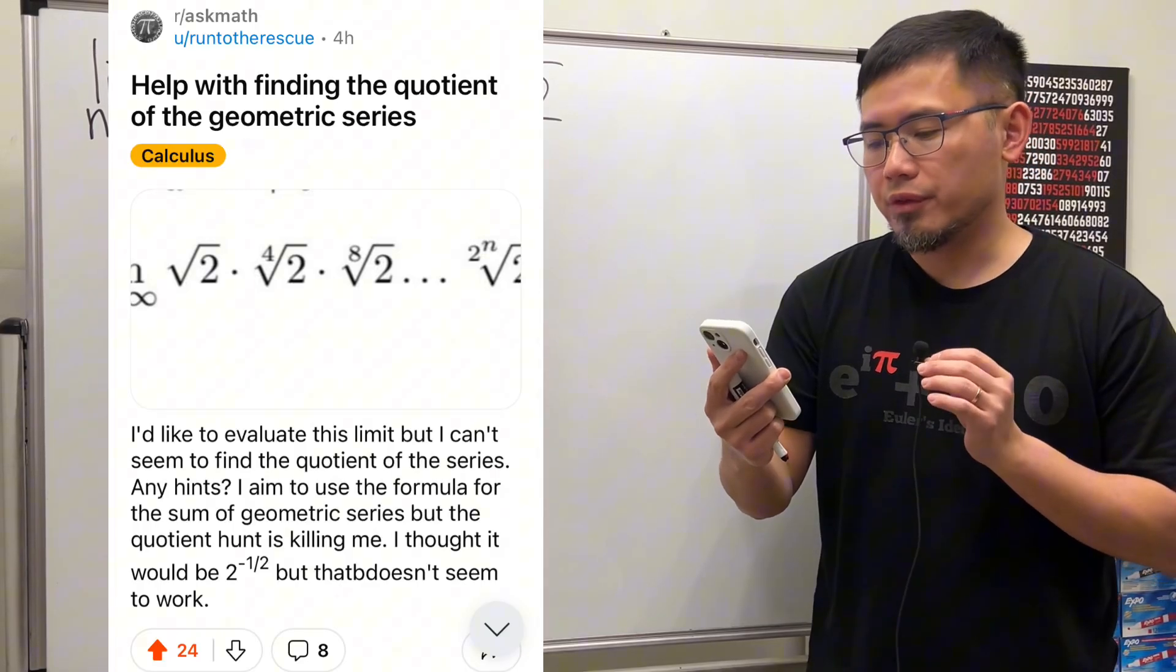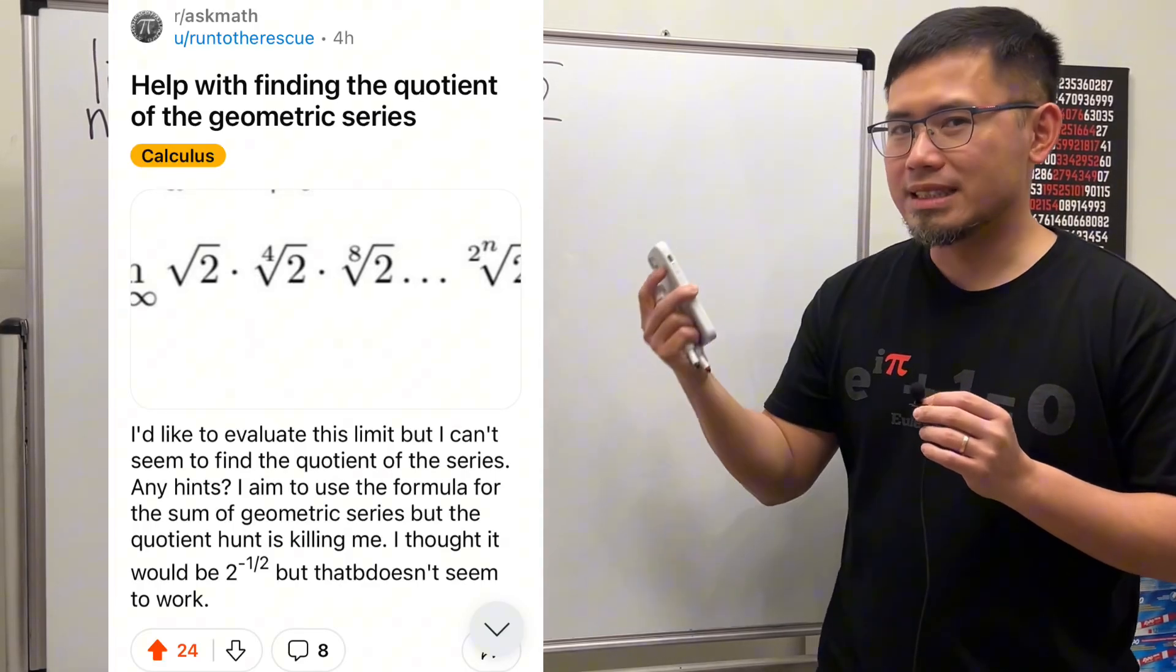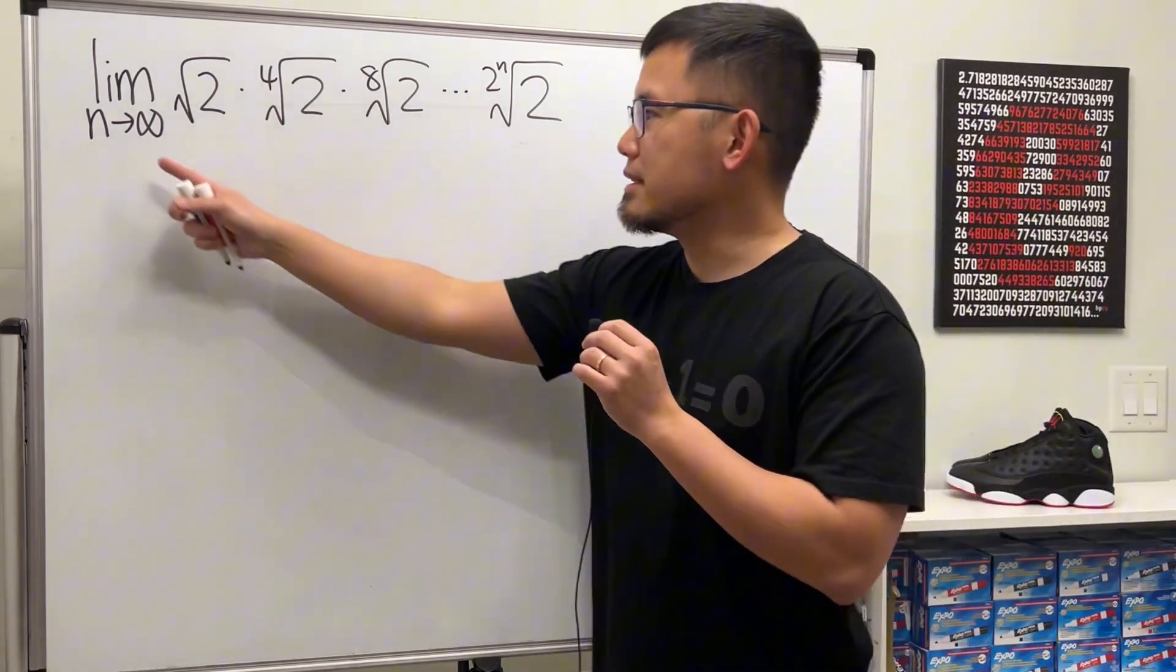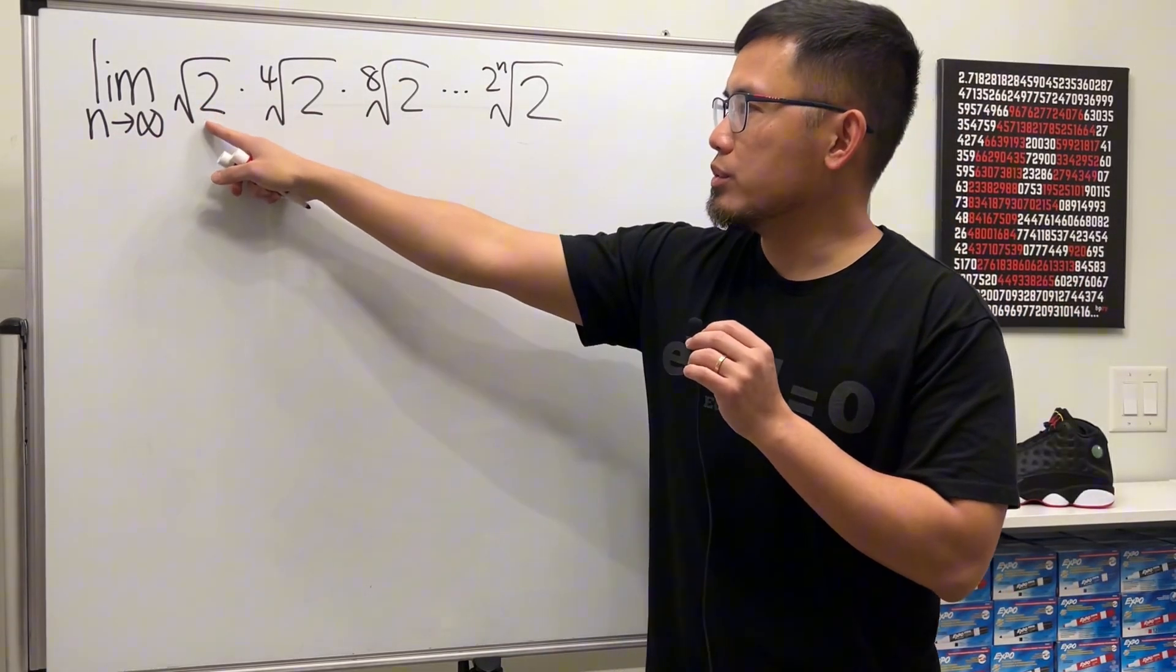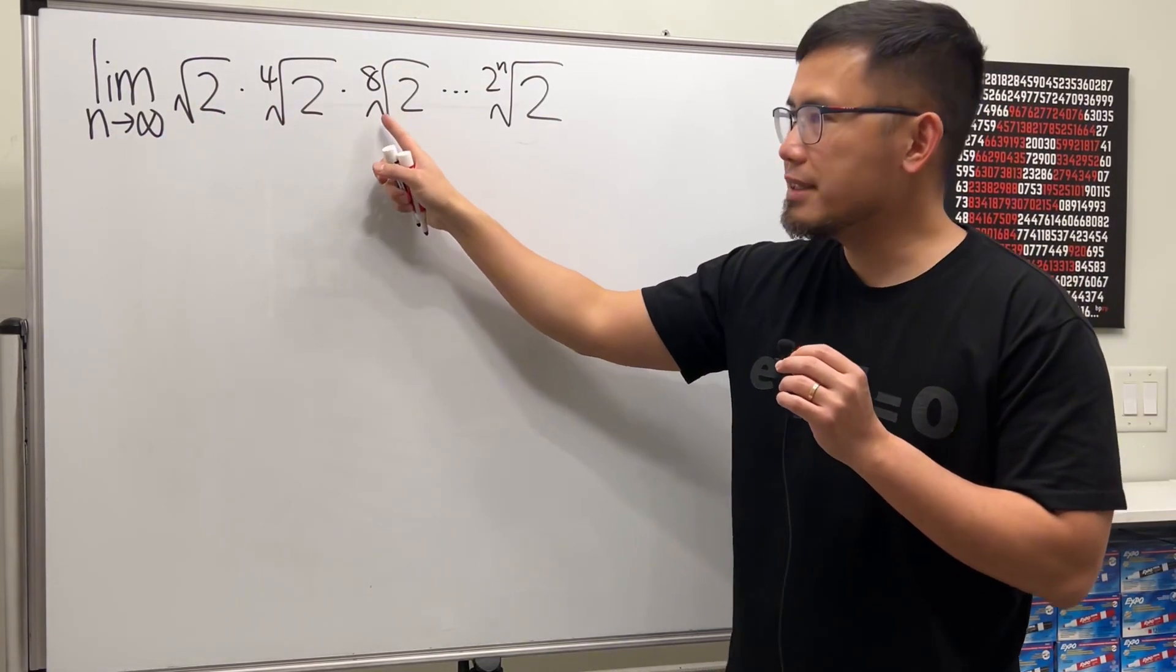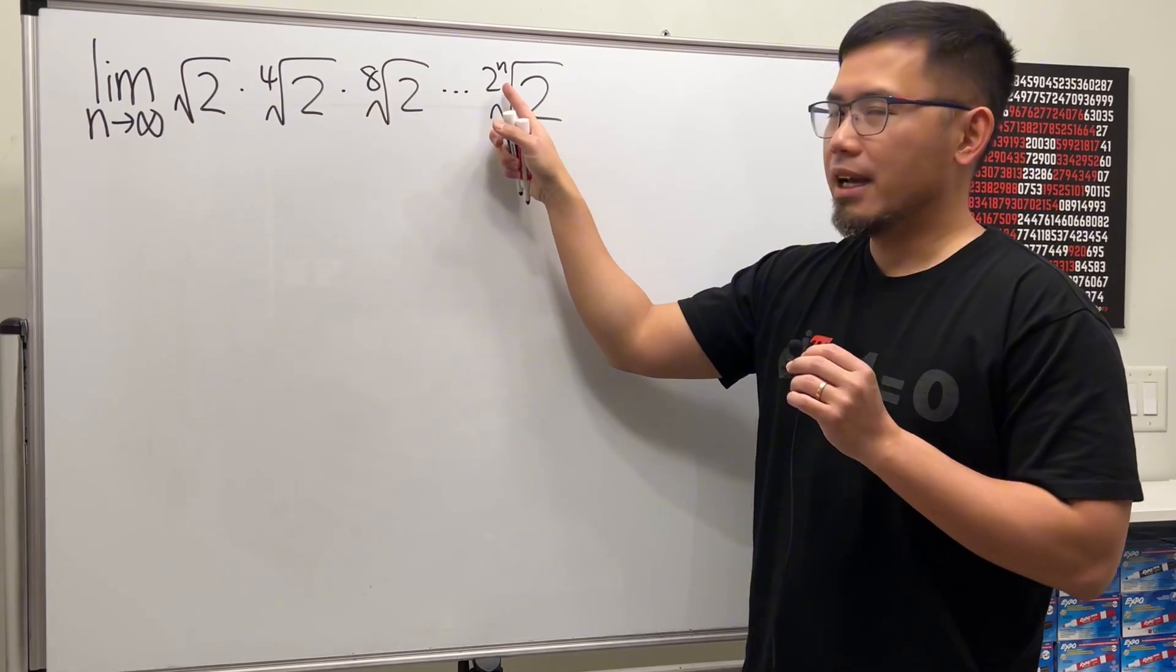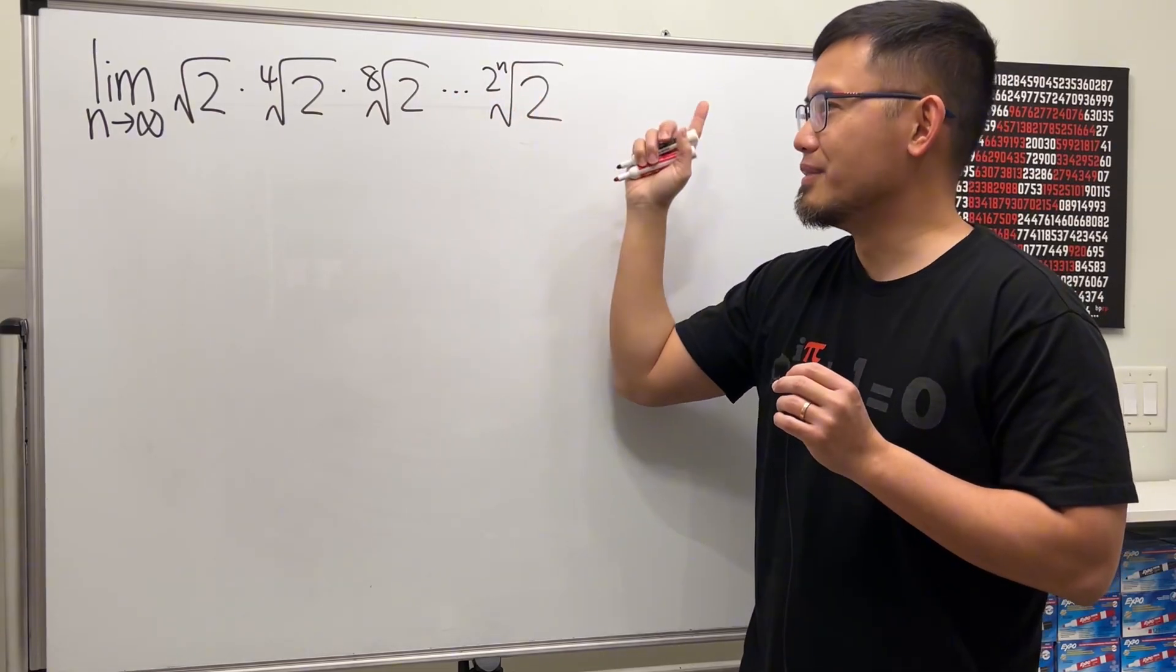How about finding the quotient of the geometric series? Let's have a look. Here we have the limit as n goes to infinity of square root of 2 times the fourth root of 2 times the eighth root of 2 and so on. And this is the 2 to the nth root of 2.